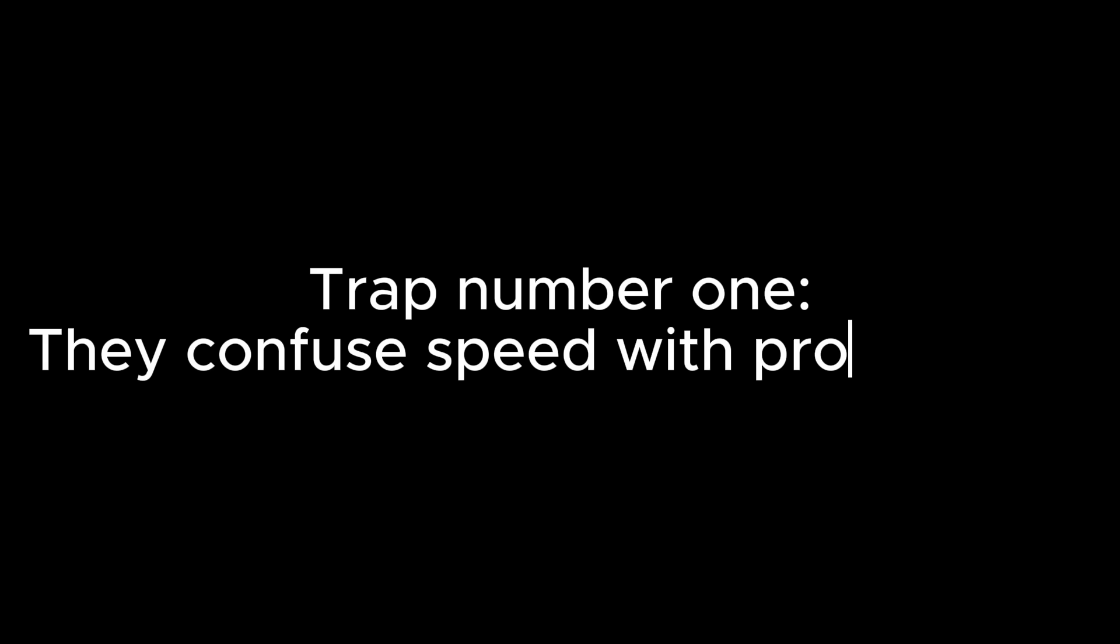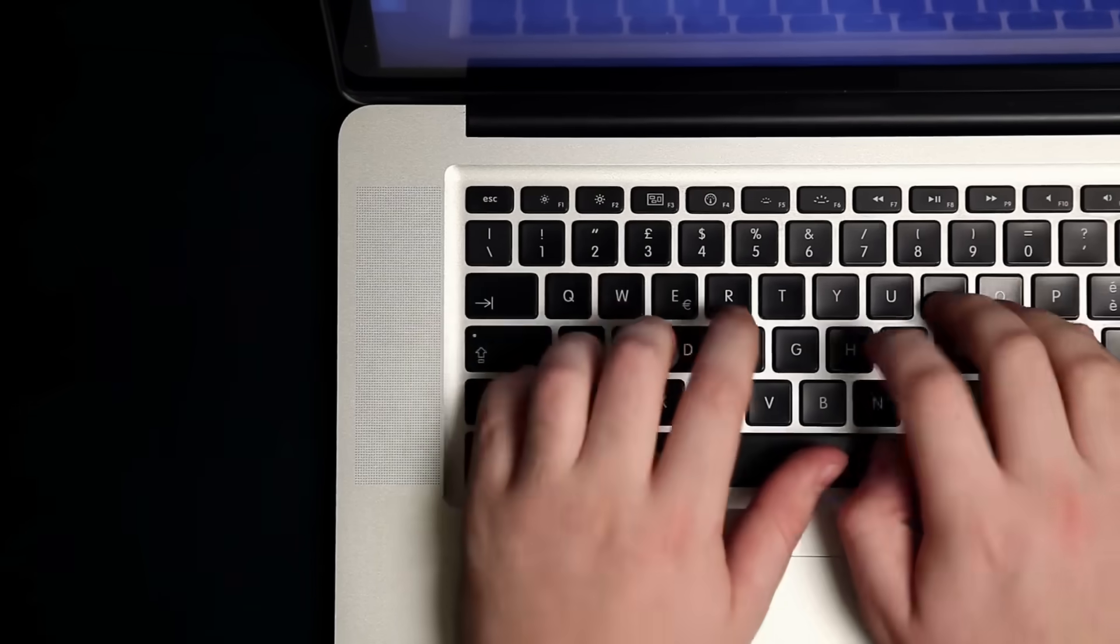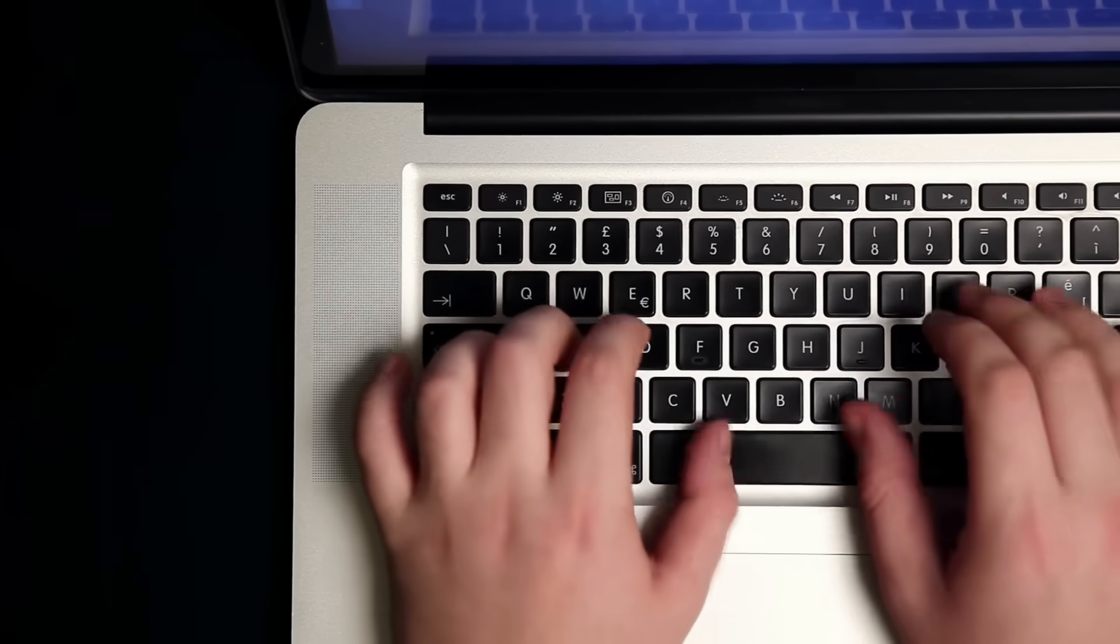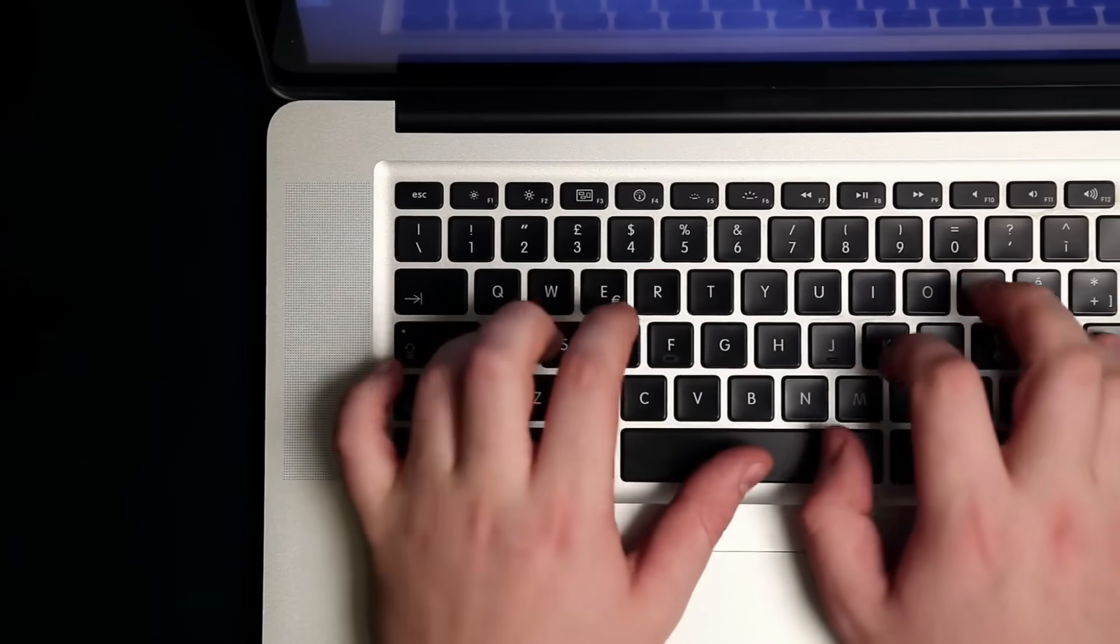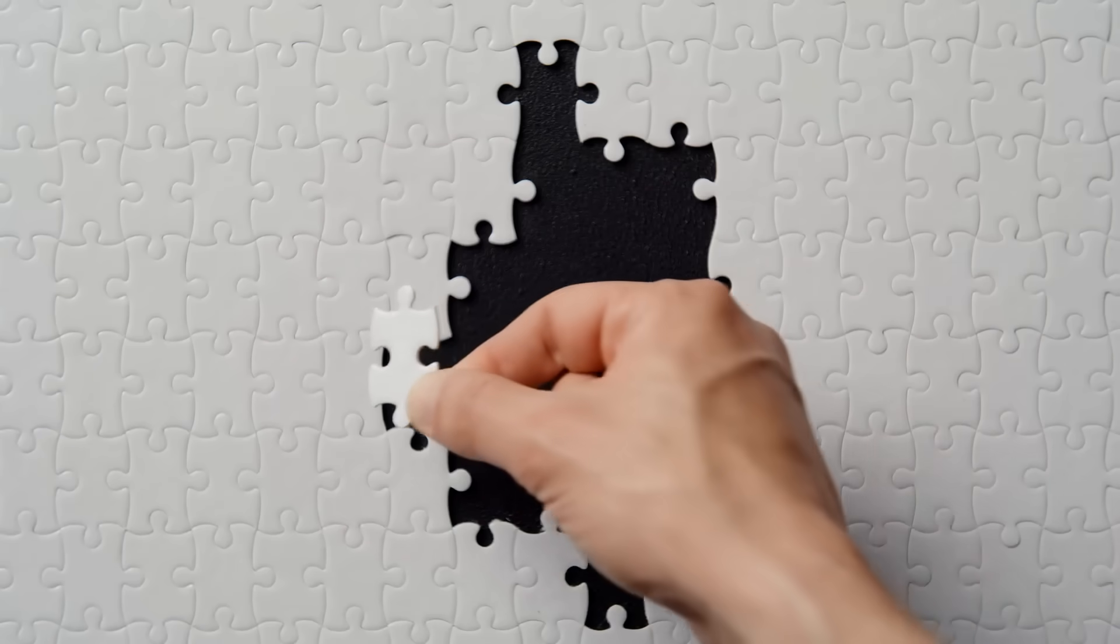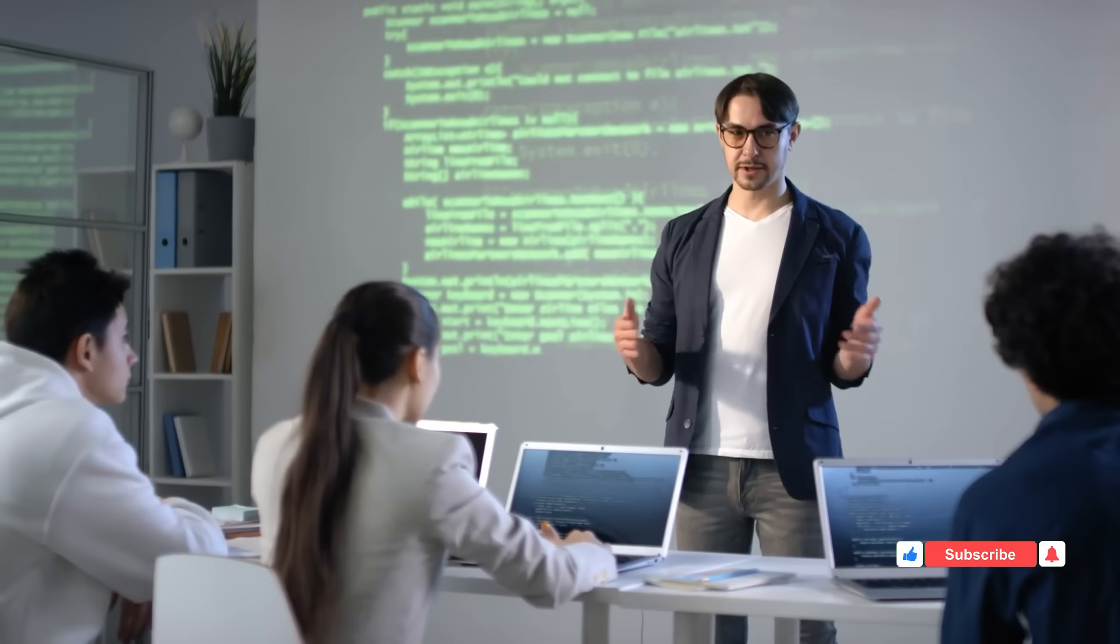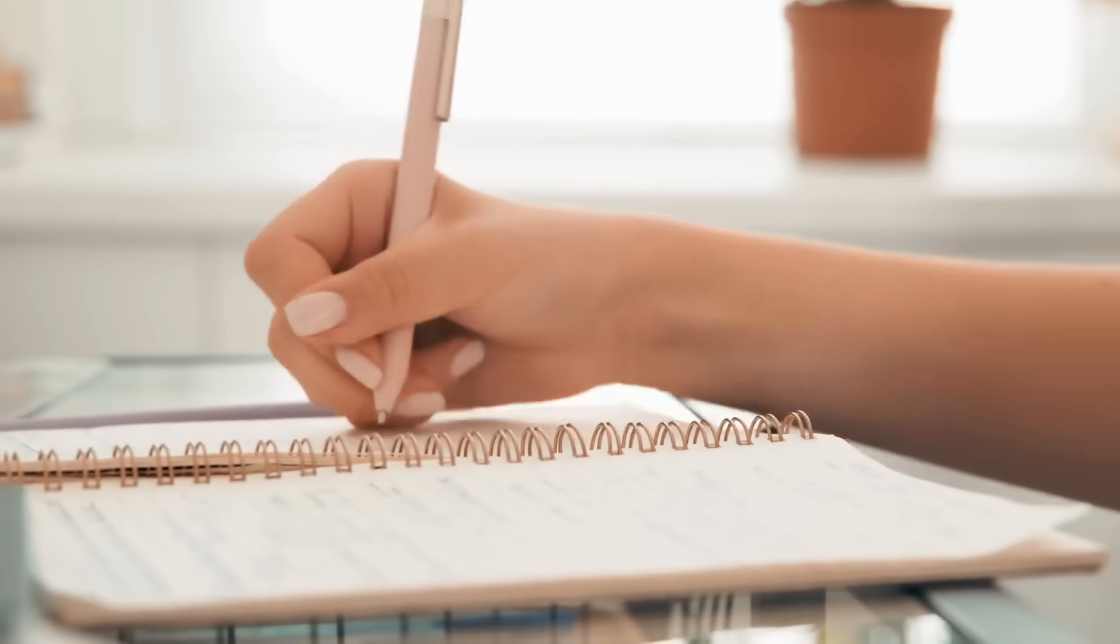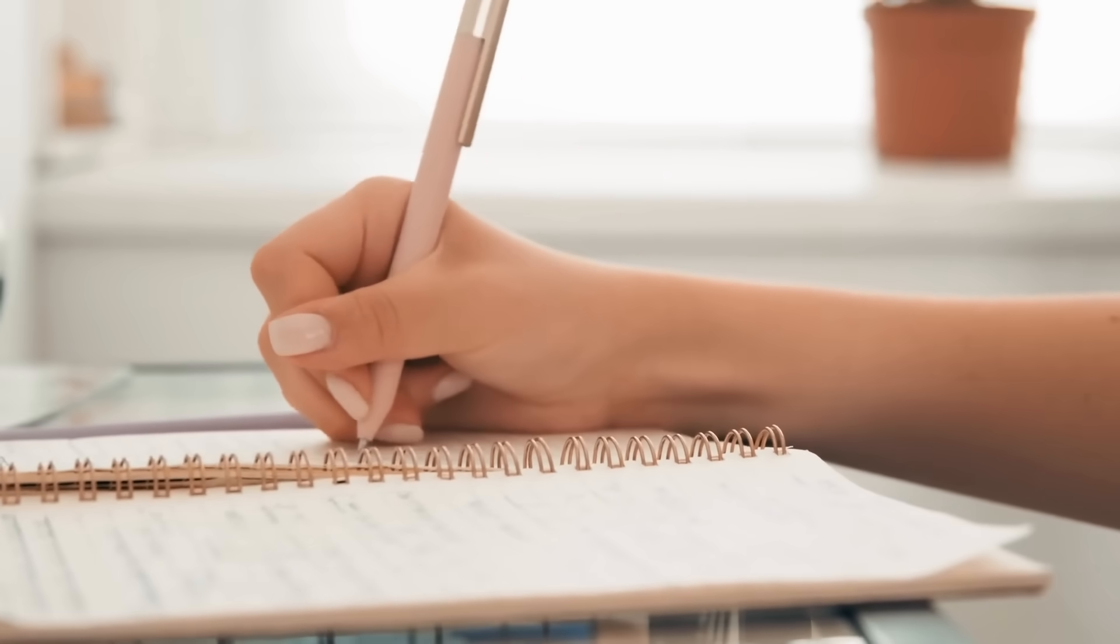The stupidity traps. Now here's where smart people make critical mistakes. Trap number one: they confuse speed with productivity. I can type 80 words per minute, so I'll capture more information and learn more. But that logic is backwards. When learning is too easy, it doesn't stick. This is what psychologist Robert Bjork calls desirable difficulty. The effort of handwriting is precisely what makes it effective.